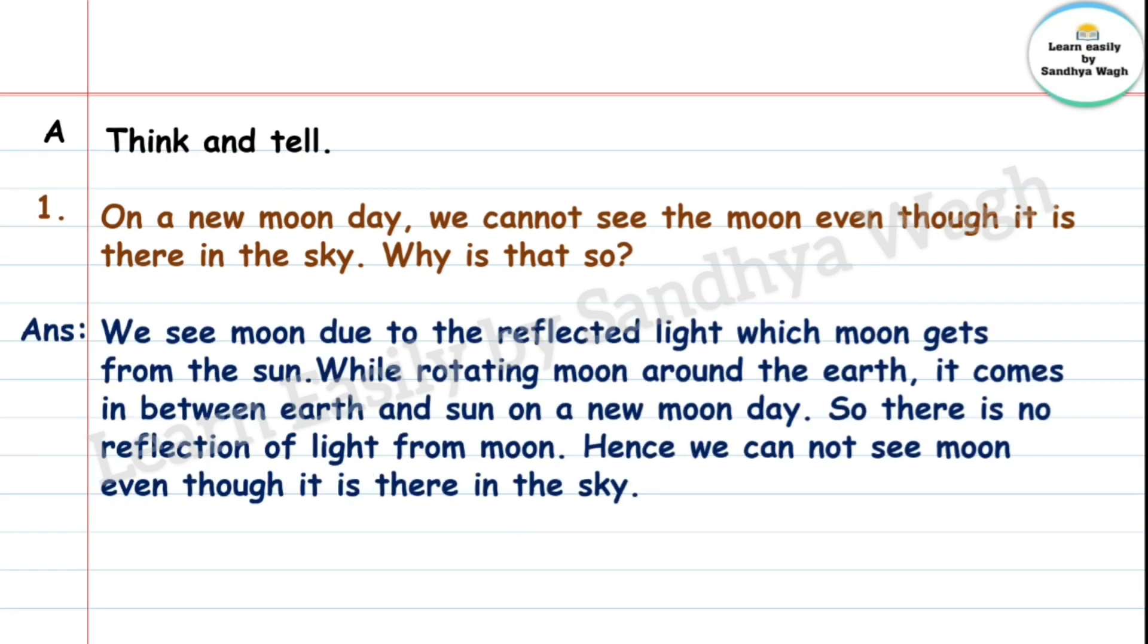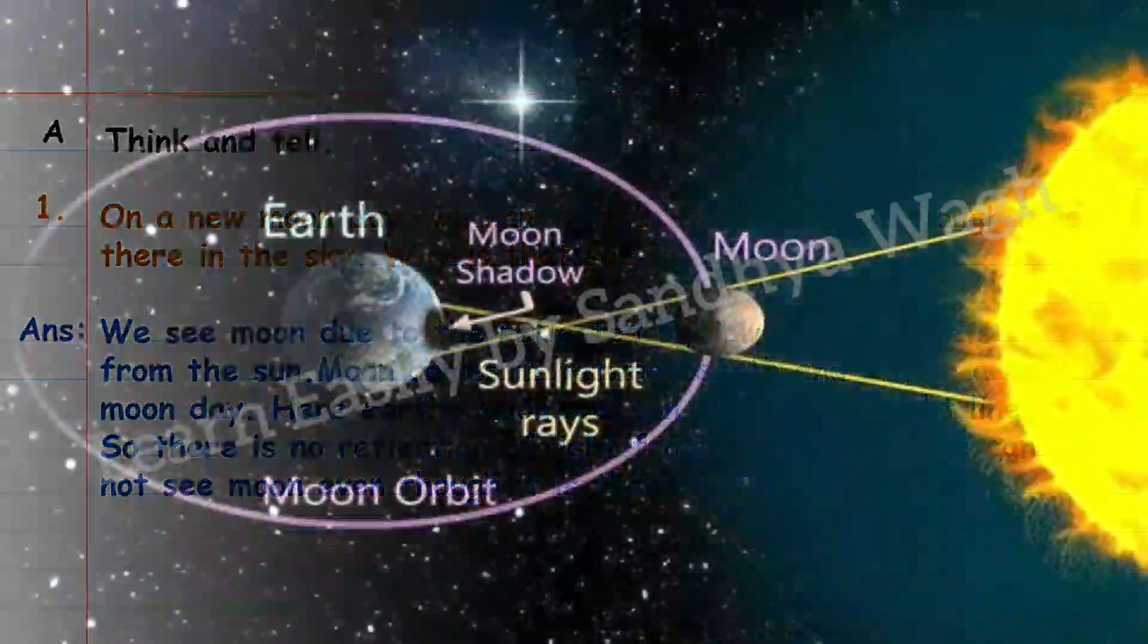Answer. We see moon due to the reflected light which moon gets from the sun. While rotating moon around the earth, it comes in between earth and sun on a new moon day. So, there is no reflection of light from moon. Hence, we cannot see moon even though it is there in the sky.